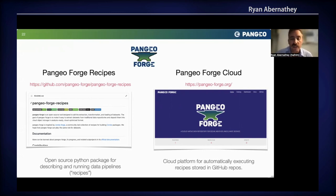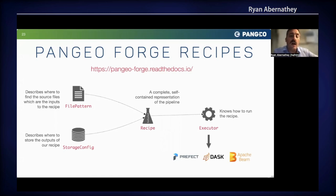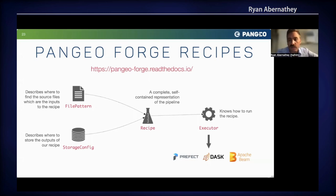We also have Pangeo Forge Cloud, a cloud platform for automatically executing recipes stored in GitHub repositories. At a high level, we create a file pattern that describes where to find the source files, and a storage config that describes where we want to store the outputs. We bring these together along with any processing steps into something we call a recipe, and then take that recipe to an executor which knows how to run it. The executor framework is designed to be flexible, allowing you to run recipes on your favorite distributed dataflow application — we currently have support for Prefect, Dask, and Apache Beam.